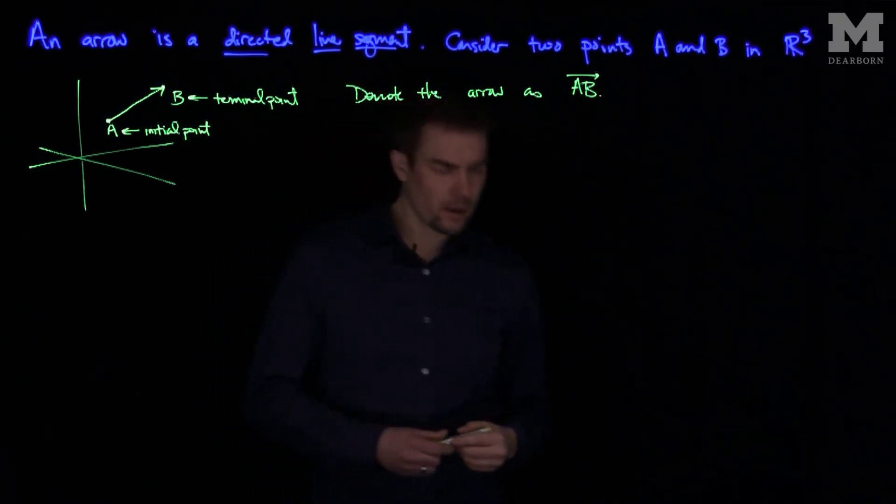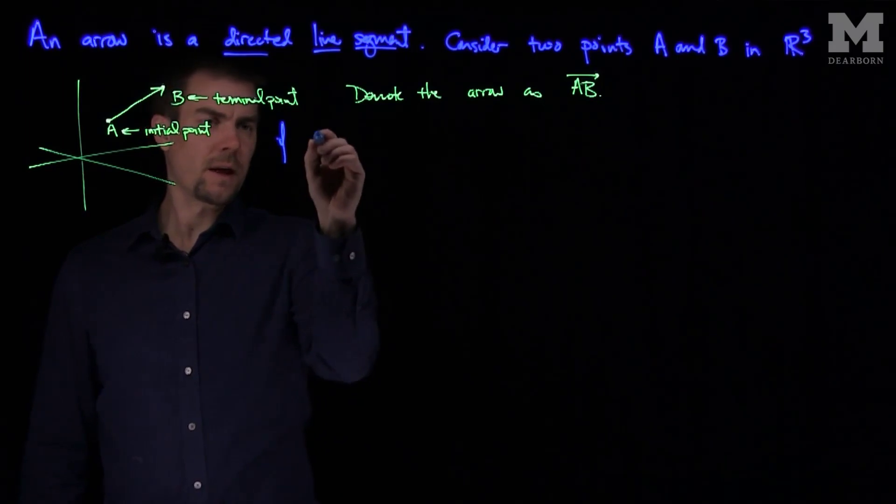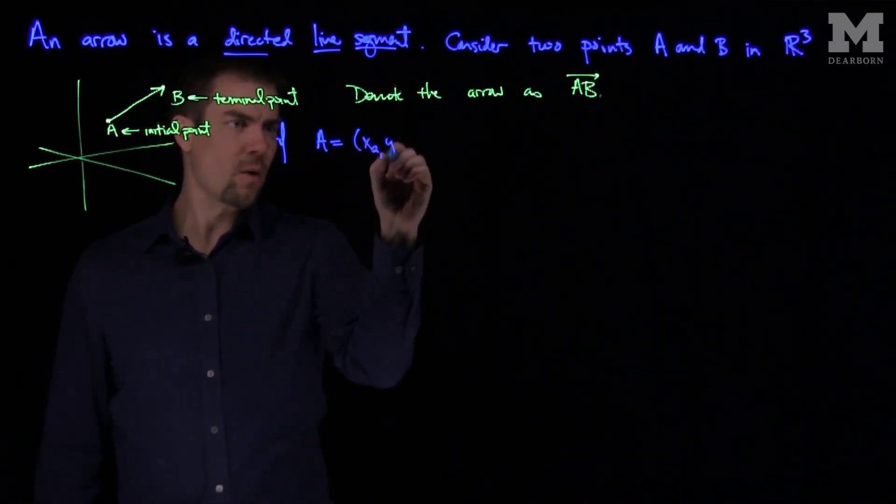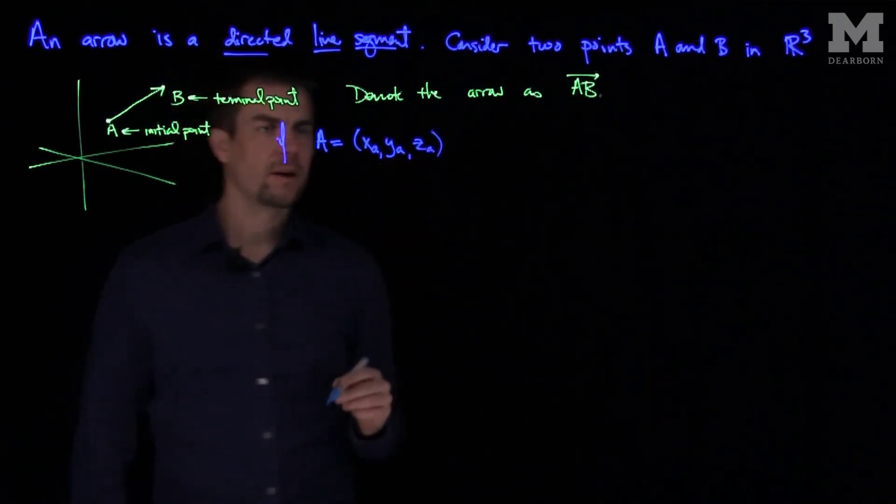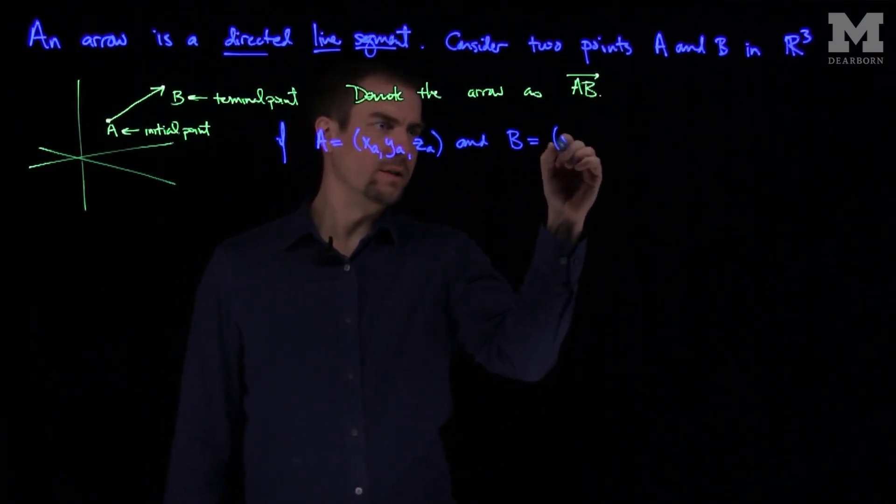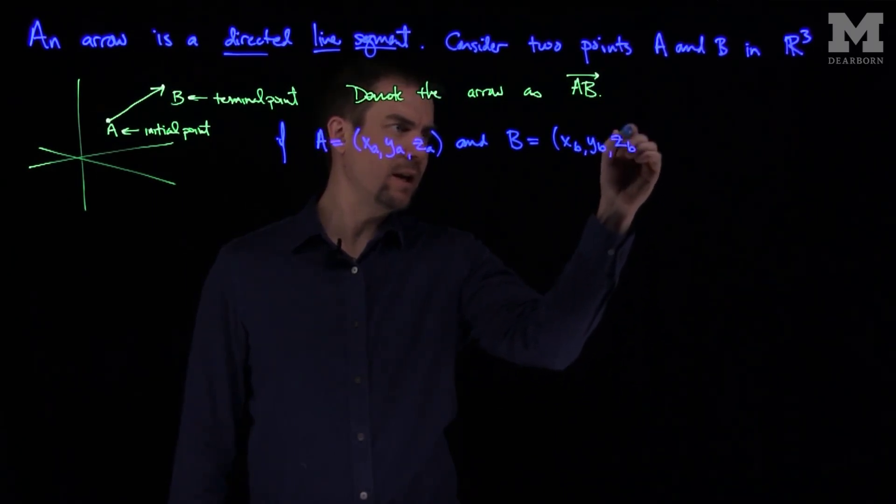Now arrows come from points. And so if the point A was (XA, YA, ZA) and the point B was (XB, YB, ZB).